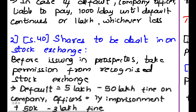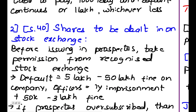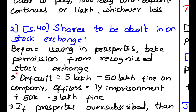The next restriction is that shares are to be dealt in on a stock exchange. Before issuing a prospectus, they should take permission from a recognized stock exchange. Only after they take permission from a recognized stock exchange can they issue a prospectus to offer shares.